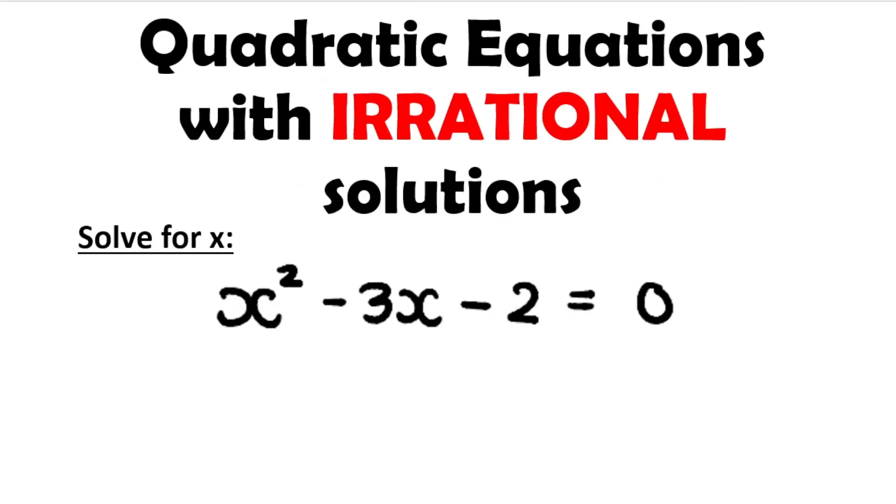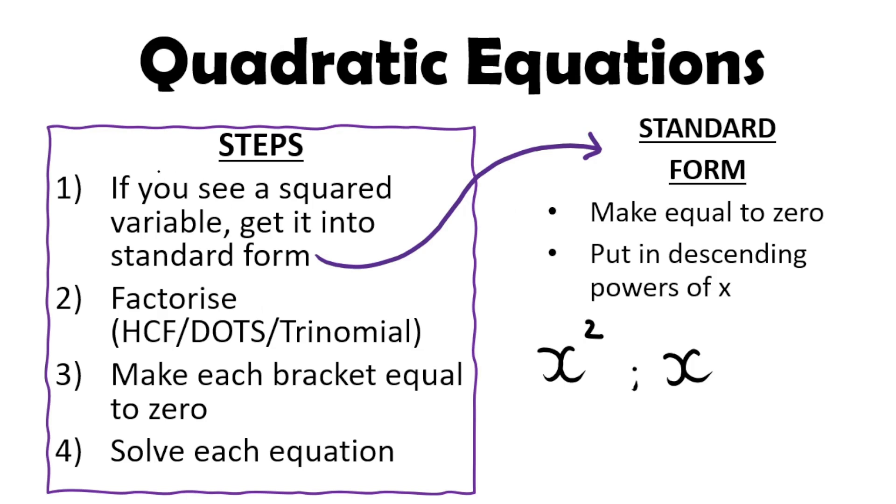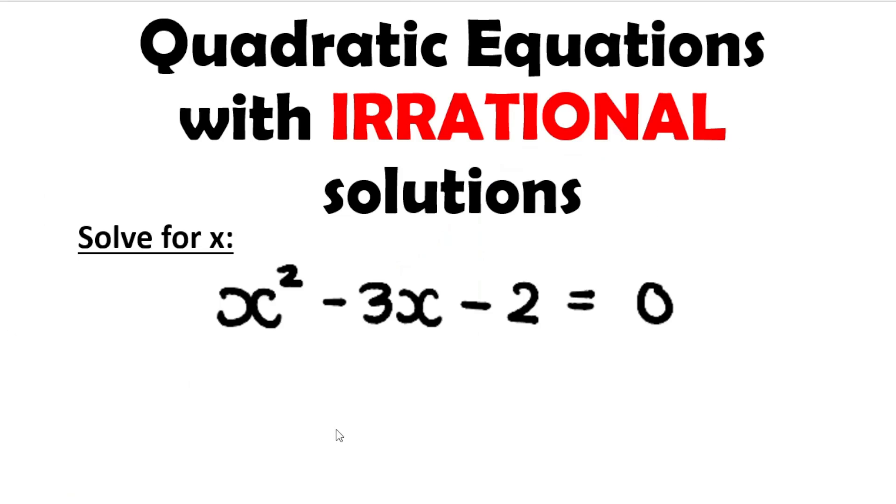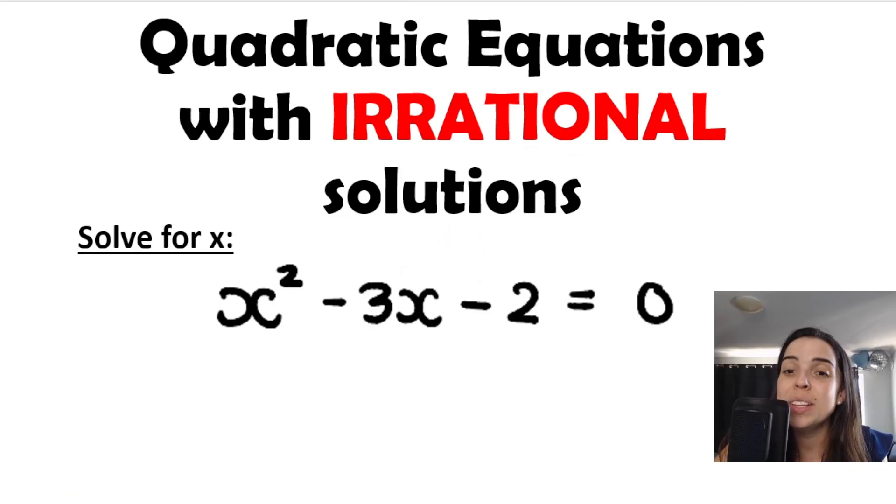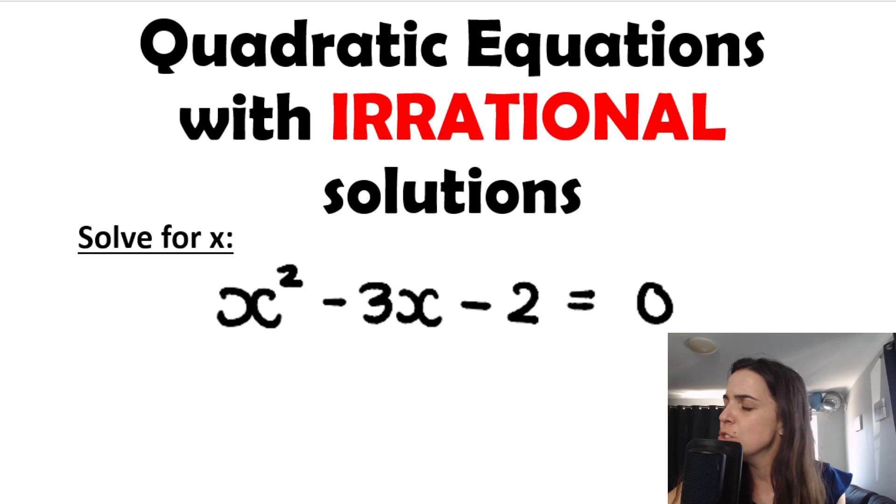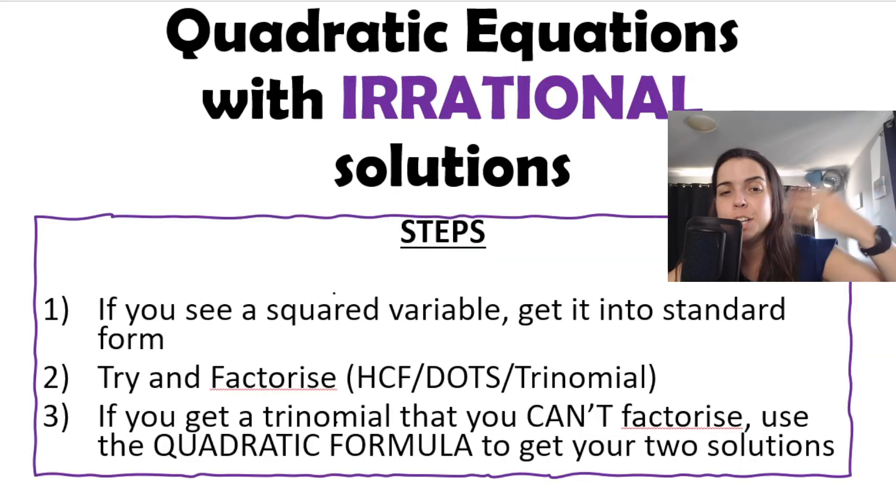For example, if I gave you x squared minus 3x minus 2 equals zero and said solve for x, you would say it's a quadratic equation with a square, in standard form and equal to zero. According to the steps, we need to factorize using HCF, dots, or trinomial. But no matter how hard you try to do a normal trinomial with these numbers, you won't be able to factorize it. So if you get a trinomial you can't factorize, you need to use the quadratic formula.